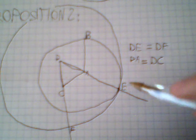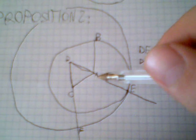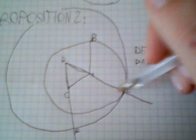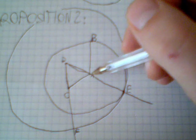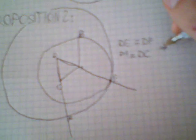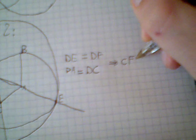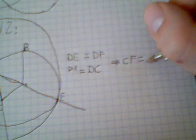Then I can subtract from this side and this side DC and DA and I get that CF is equal to AE.